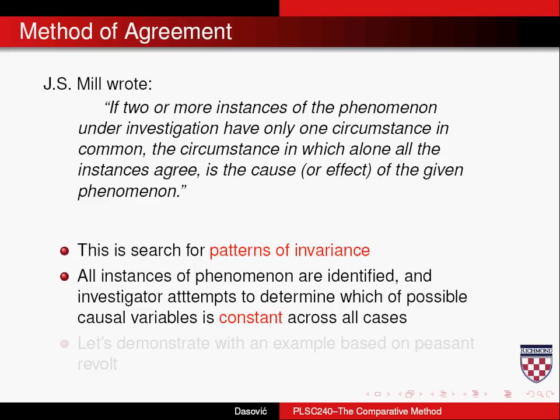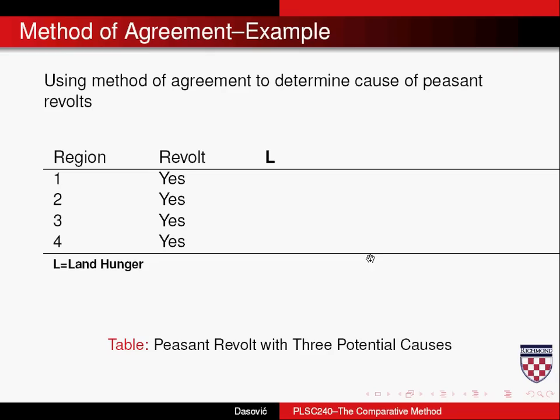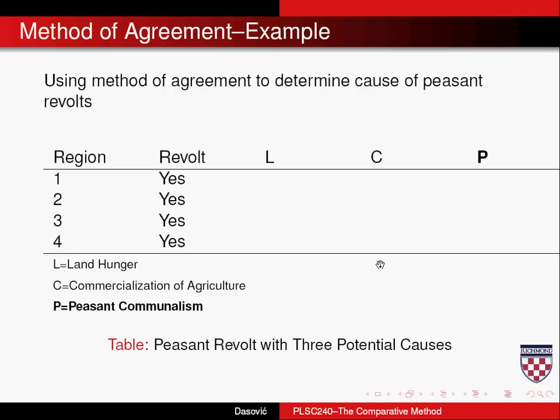What you do is identify all instances of a particular phenomenon, and an investigator then attempts to determine which of these possible causal variables is constant across cases. If you find one that is constant across all cases and lines up with all instances of a phenomenon, then that is the putative cause. Let's demonstrate with an example based on peasant revolt. Let's assume we have four regions in which peasant revolt has occurred.